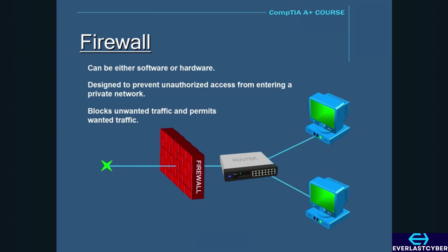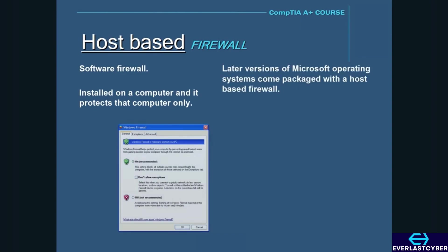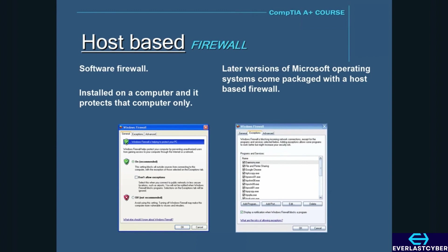In today's high-tech world, a firewall is essential to every business to keep its network safe. Firewalls come in different types, and one type is called a host-based firewall, which is a software firewall. This is the kind of firewall that is installed on a computer, and it protects that computer only. For example, later versions of Microsoft operating systems come prepackaged with a host-based firewall. You can turn the firewall on or off, and you can create exceptions based on the application name in the Exceptions tab. You can also purchase a third-party firewall and install it on your computer.